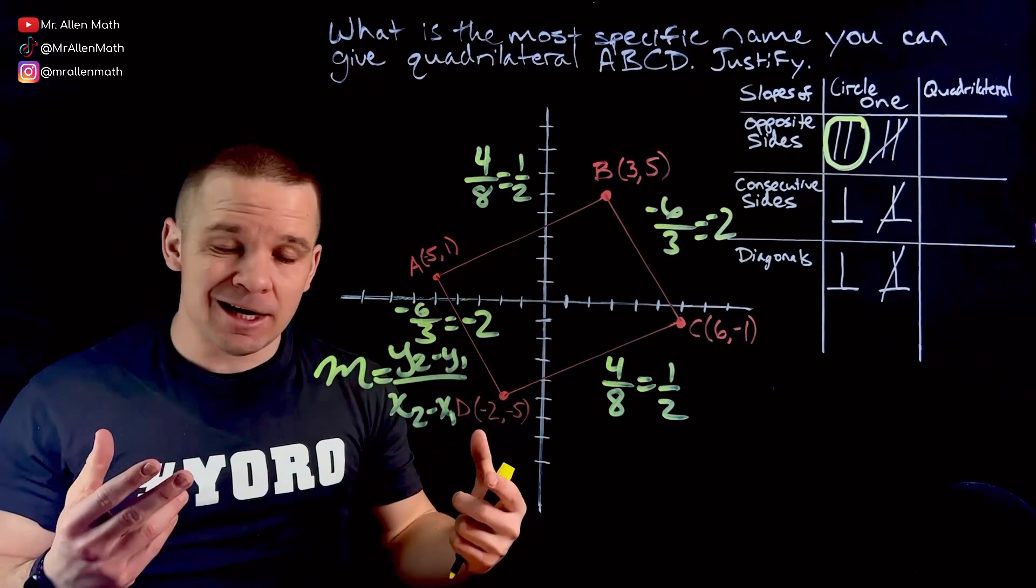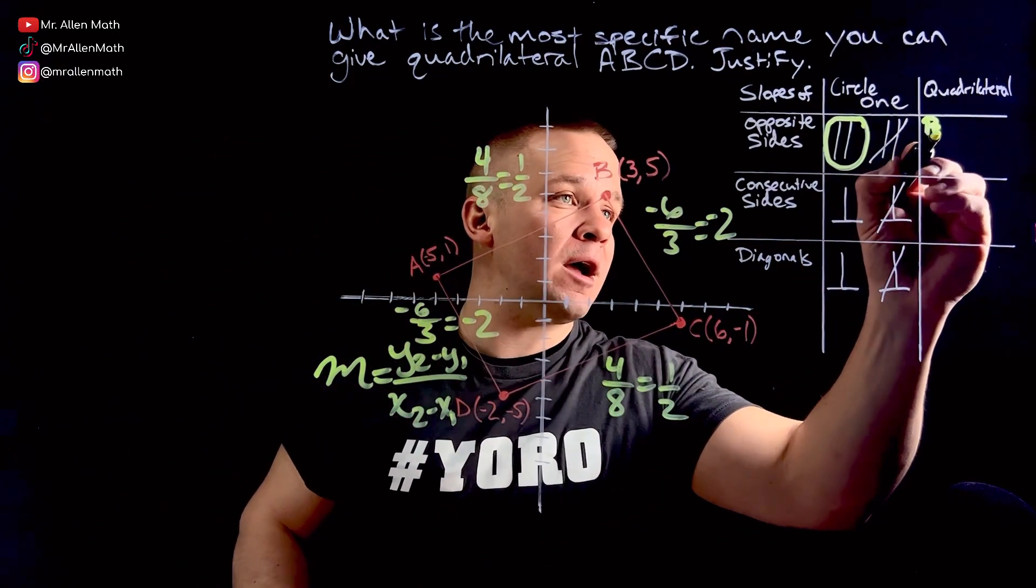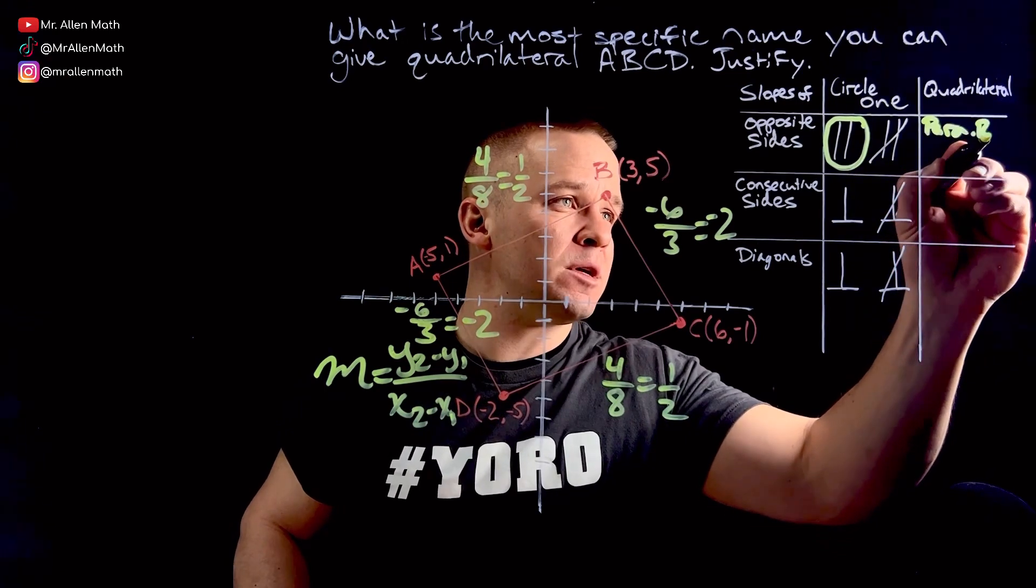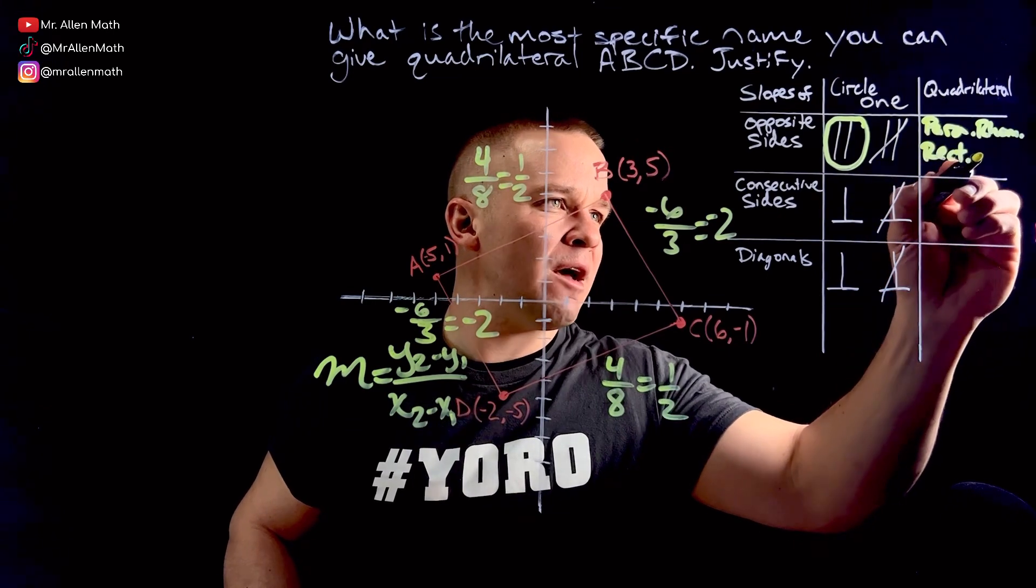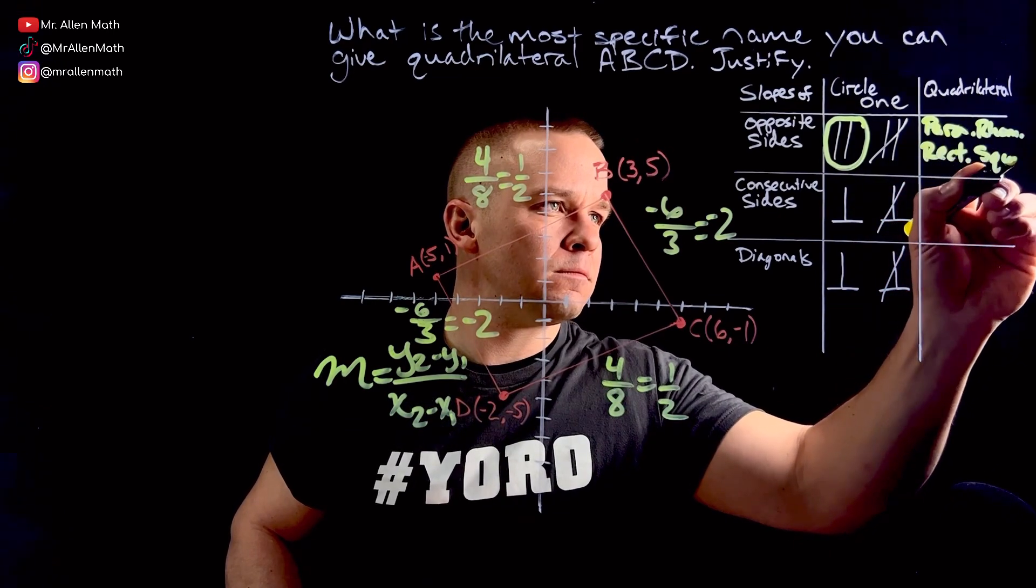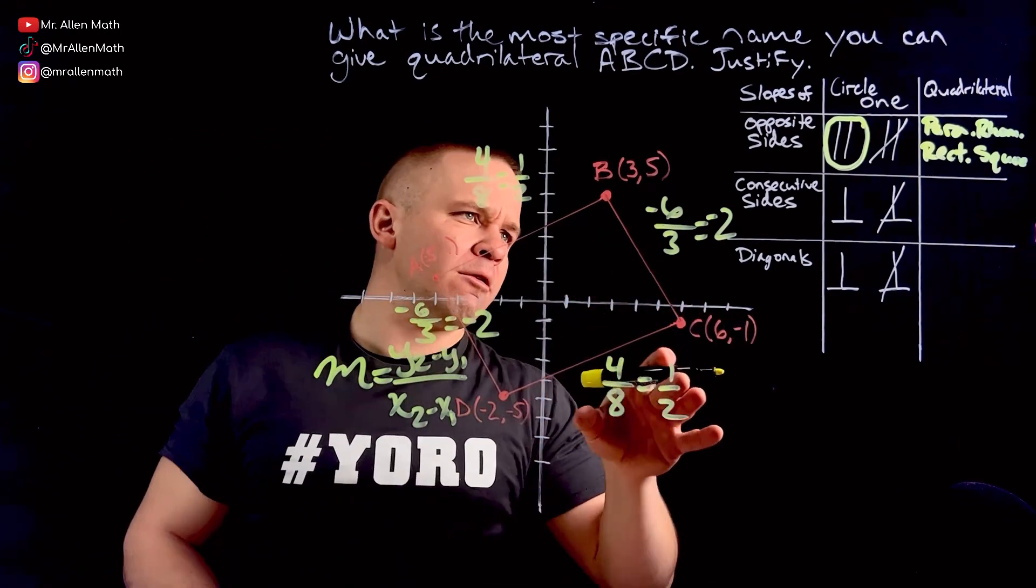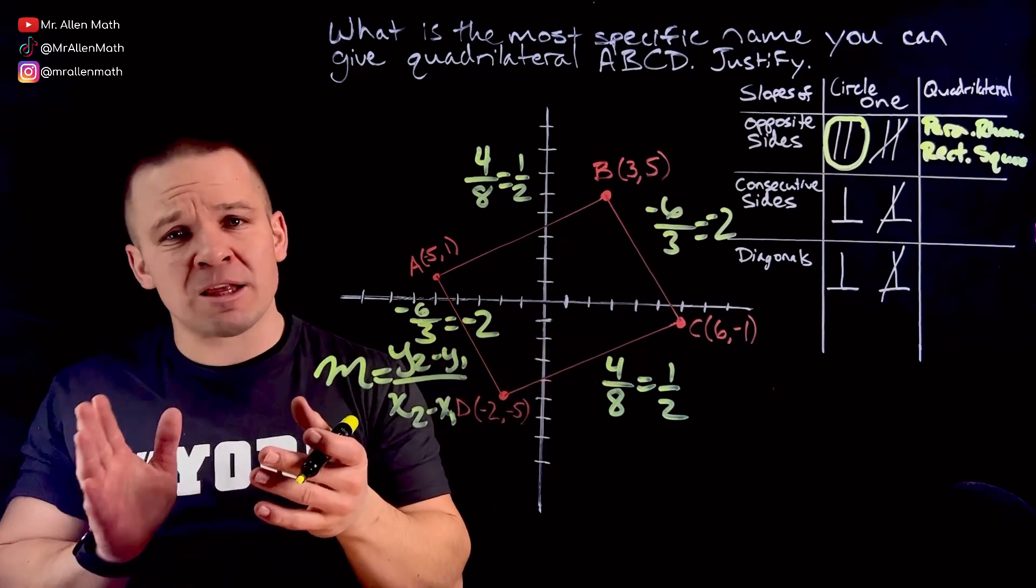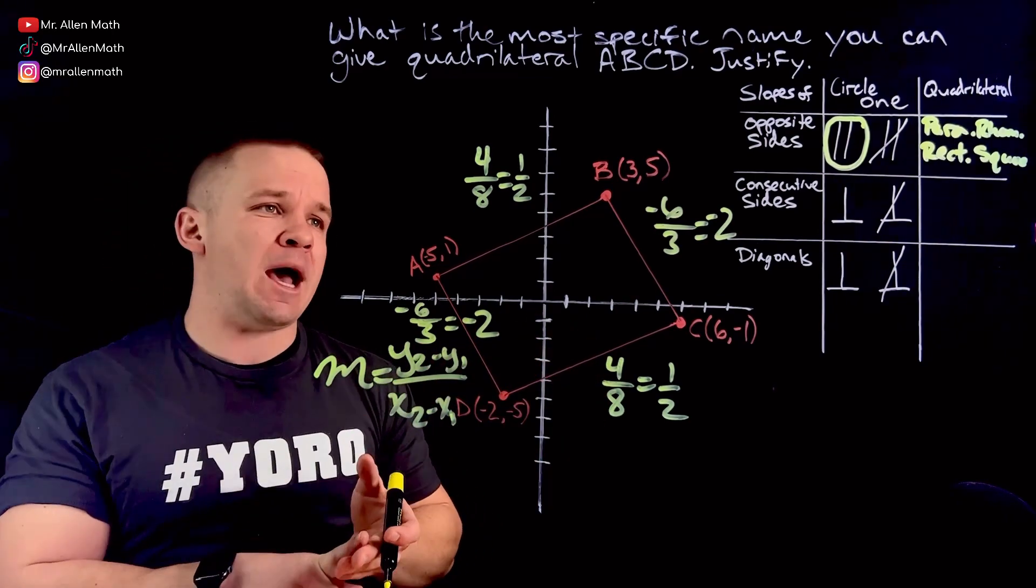My kite does not have any opposite sides parallel. So we're looking at parallelogram. We've got ourselves a rhombus. We've got ourselves a rectangle. And we have a square. That's okay. Parallelogram, rhombus, rectangle, and square is what we are narrowed down to. We've eliminated the possibility of this being a trapezoid, isosceles trapezoid, or kite right off the bat.